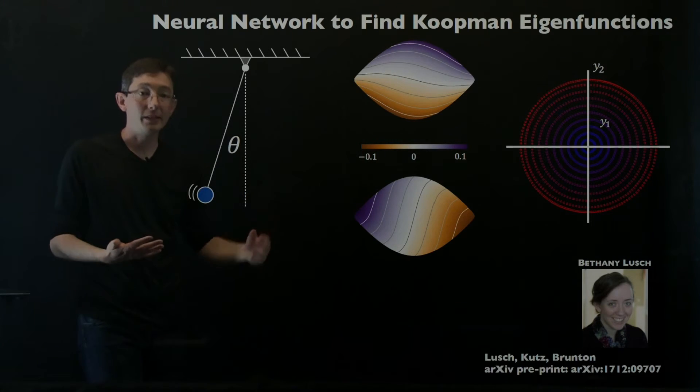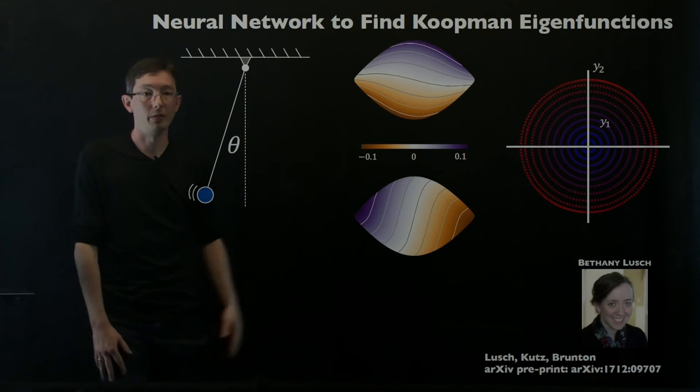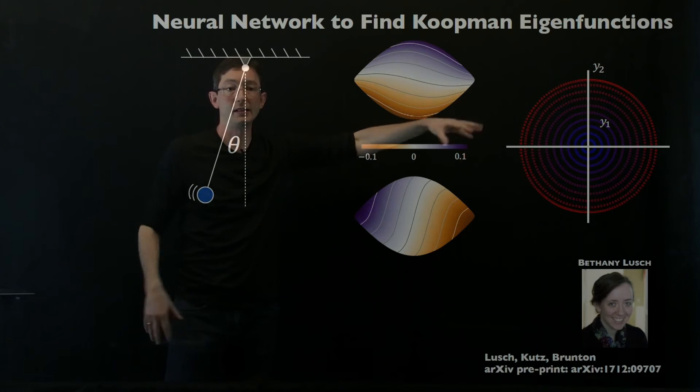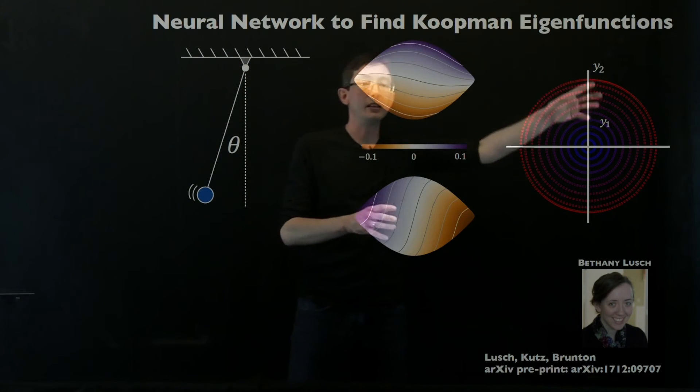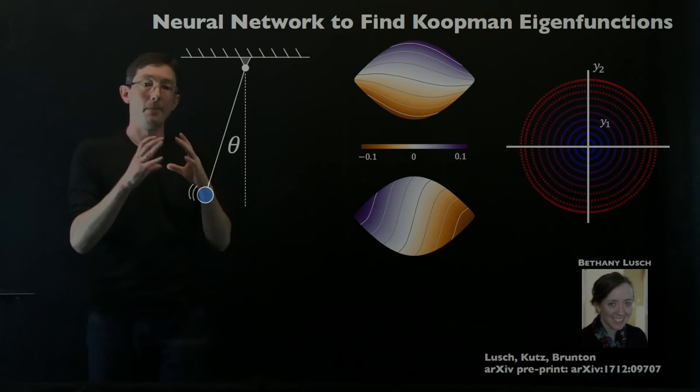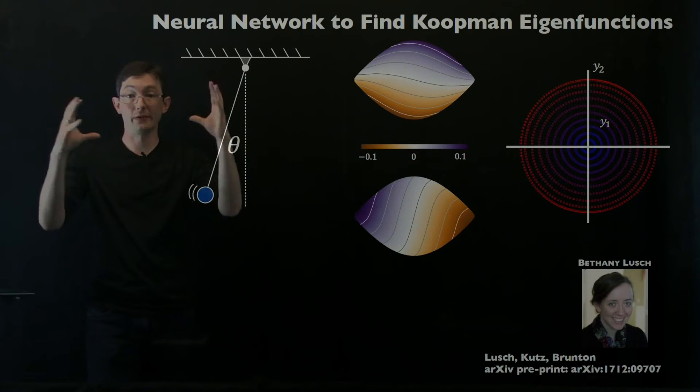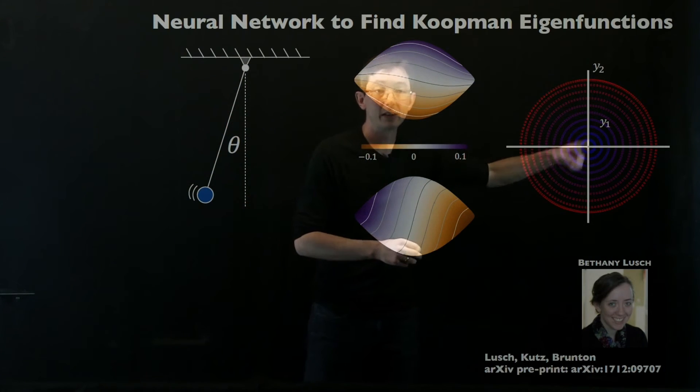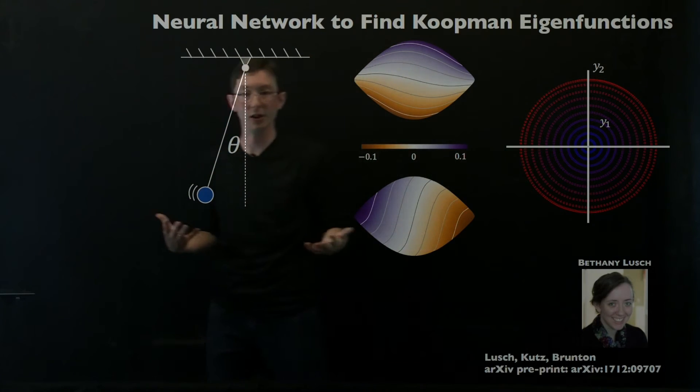She's applied this to the pendulum problem and she's essentially found these eigenfunctions in phase space that when you map into these coordinates you get perfect sines and cosines, perfect linear behavior at different frequencies for different amplitudes. The farther you go out in radius you still have sines and cosines, but now the frequency changes.